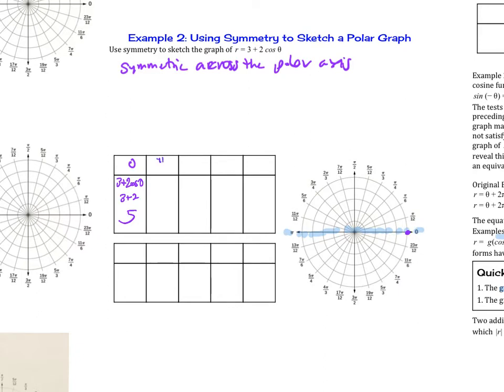And then if we plug in pi over 6, we want to go every pi over 6 or 30 degrees. We plug in pi over 6, that's going to be 2 times root 3 over 2, so that's 3 plus square root of 3, which is about 4.7. You could just plug it in your calculator to figure out that decimal to help you out. Now because we know that it's going to be symmetric across the polar axis, down here below at 11 pi over 6, it's going to be 4.7 as well. We're just using symmetry to help us graph these points.